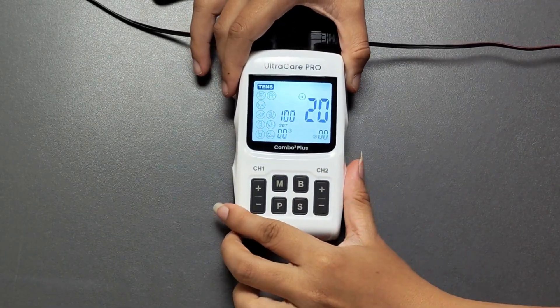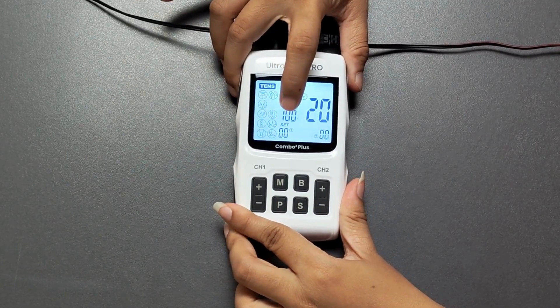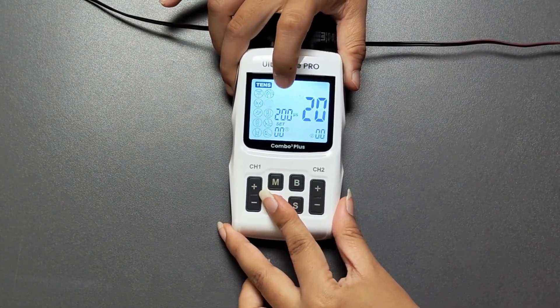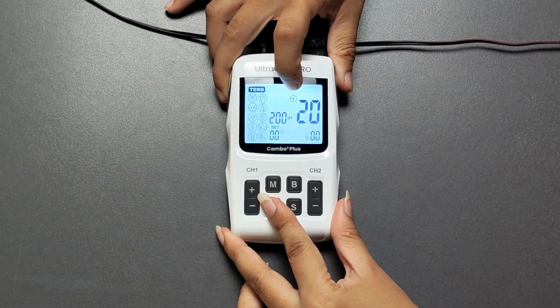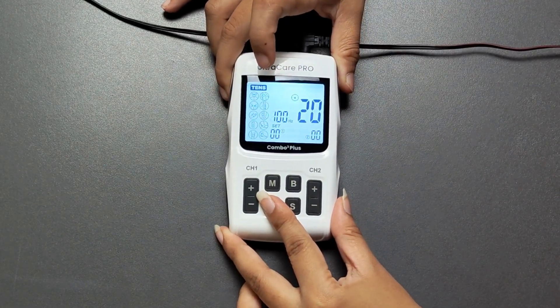Once U1 mode is selected, press S to enter the settings menu. Within the menu, press P to switch between parameters such as frequency, pulse rate, pulse width, and treatment time.